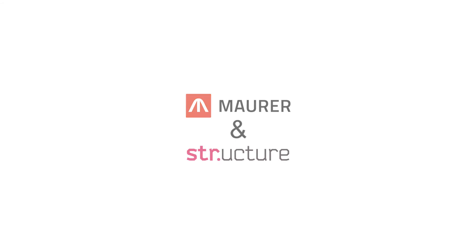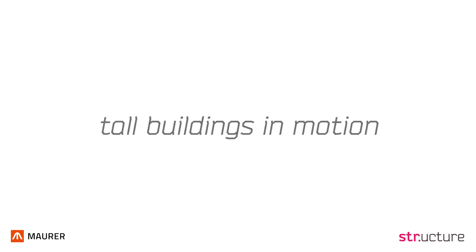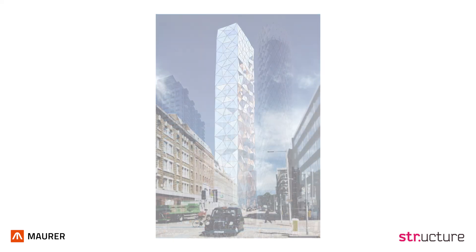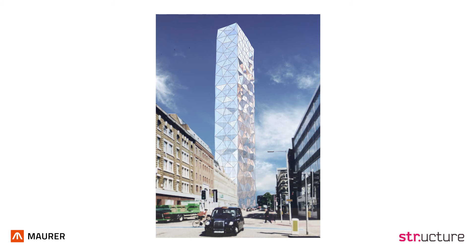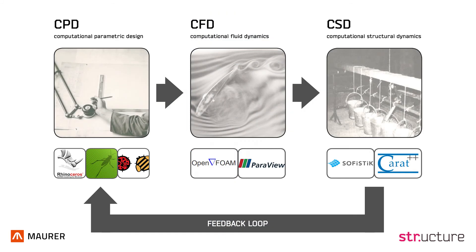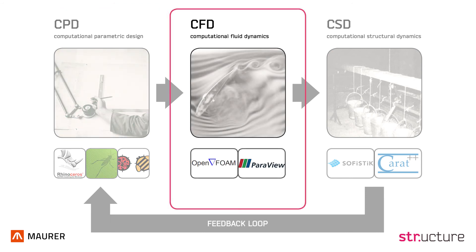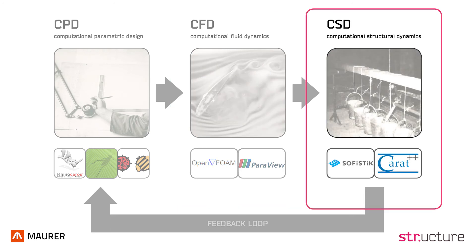Maurer and the structure present tall buildings in motion. Today, modern tall buildings often exhibit wind-induced vibrations, caused by the need to build more slender structures in densely urbanized parts of the world. The potential for finding optimized building solutions is unfolding through enormous developments in computational design tools. Computational parametric design allows engineers and architects to create buildings that would have been unimaginable a few decades ago. Computational fluid dynamics software enables the assessment of wind loads on complex building shapes, and building motions and reactions are determined by computational structural dynamics software.